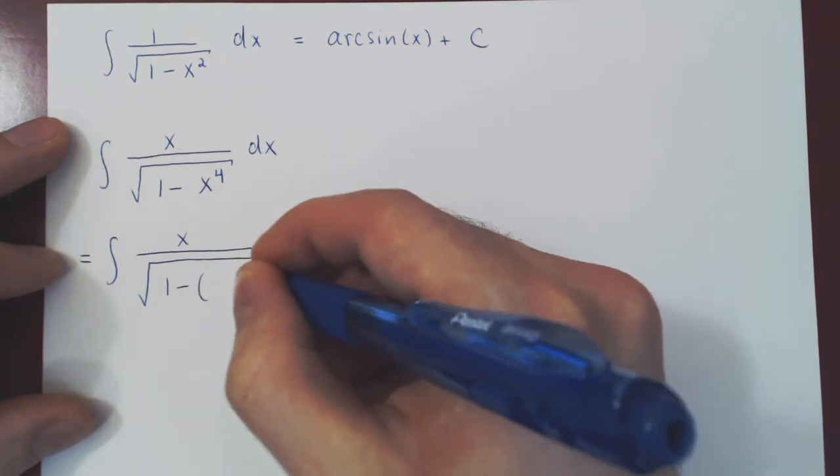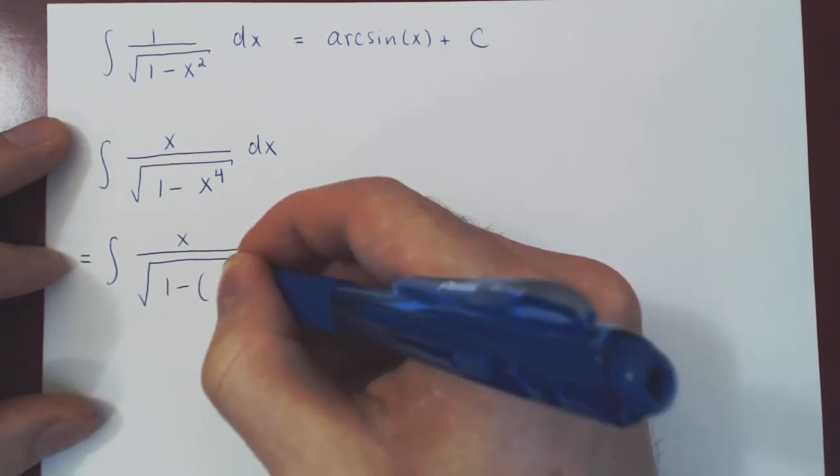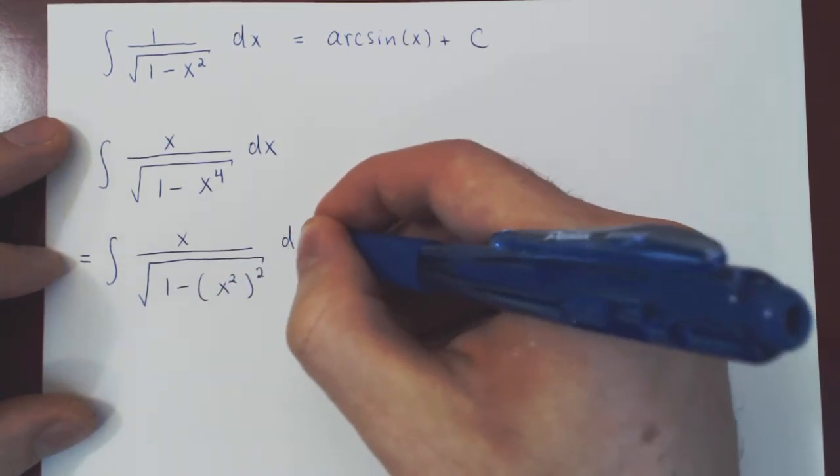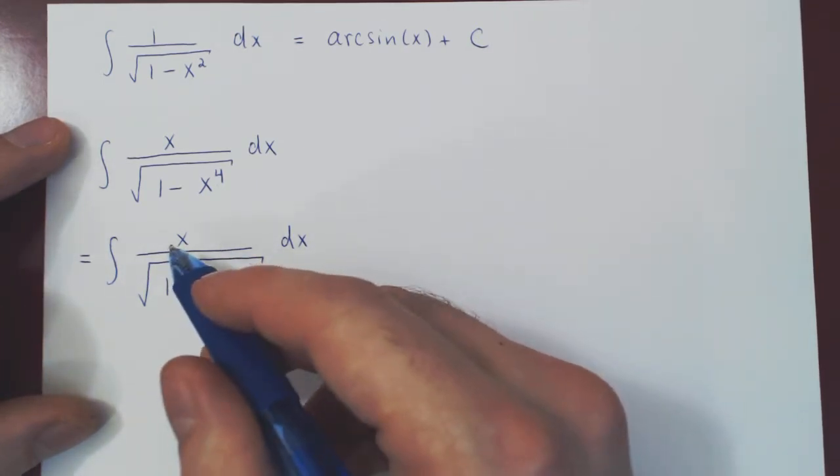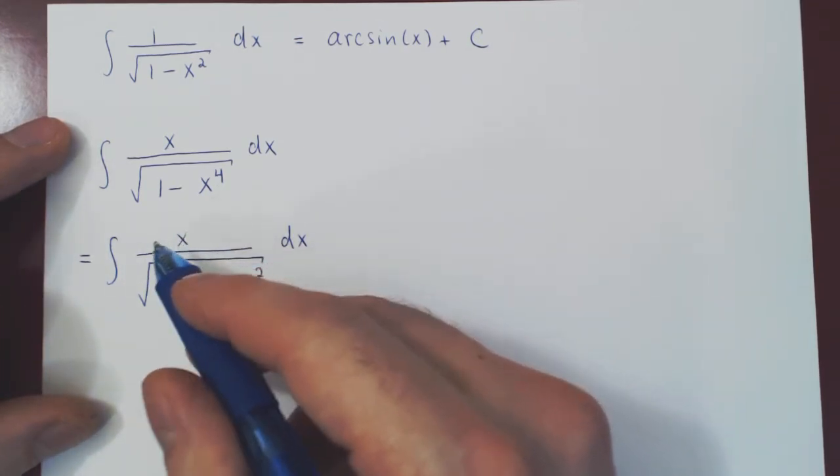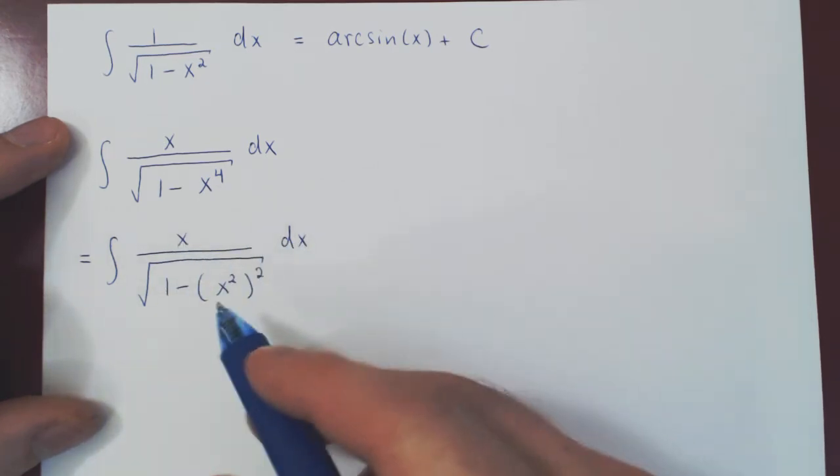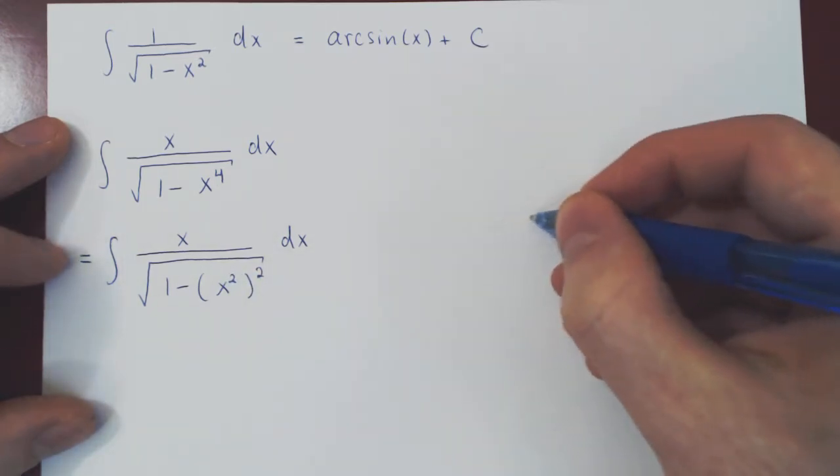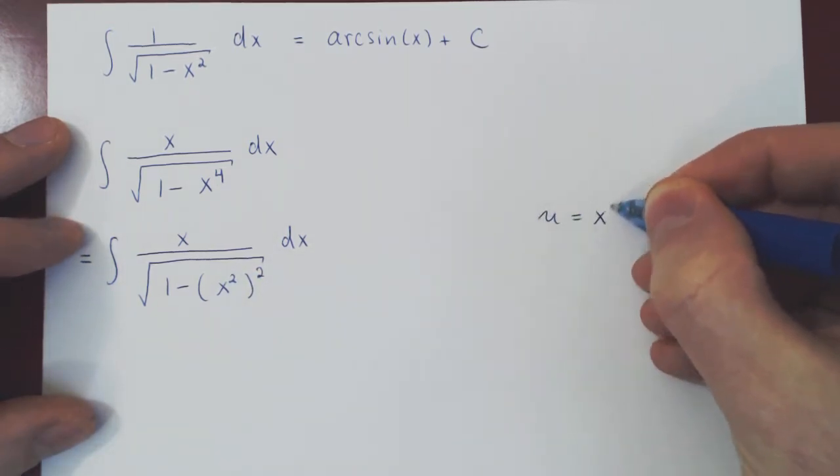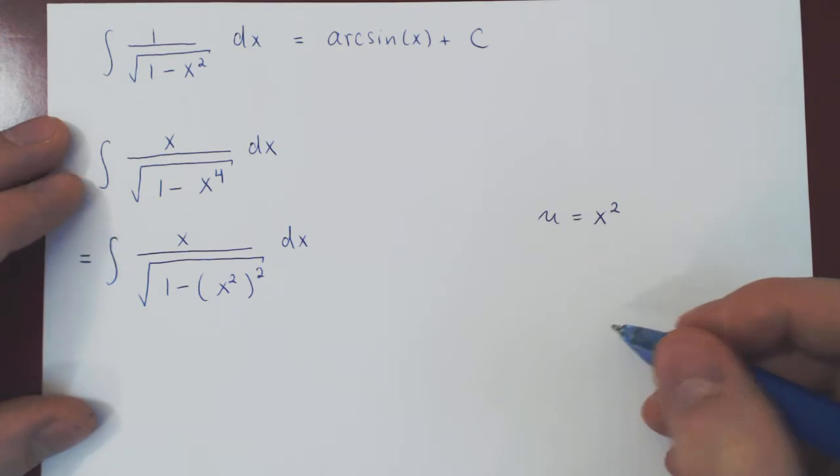So, 1 minus x squared squared. The derivative of x squared is 2x, up to 2 it's just here, and x is multiplying the expression. This is now a perfect problem for a u-substitution, letting u be simply x squared. And now let's see what comes out.